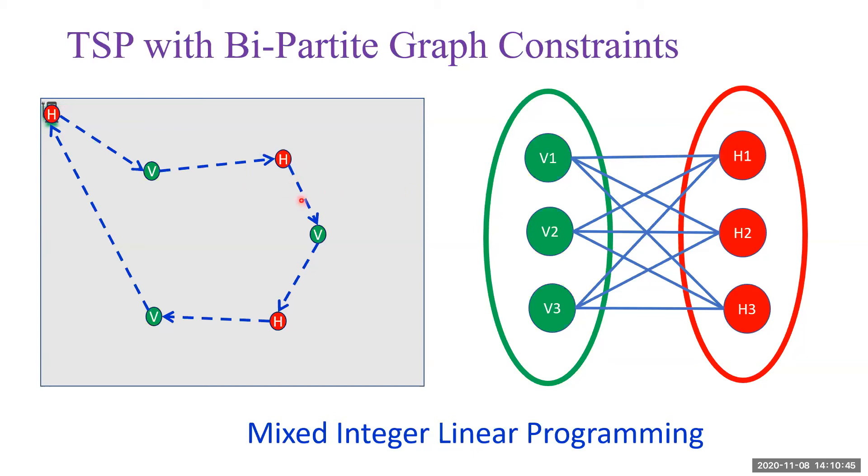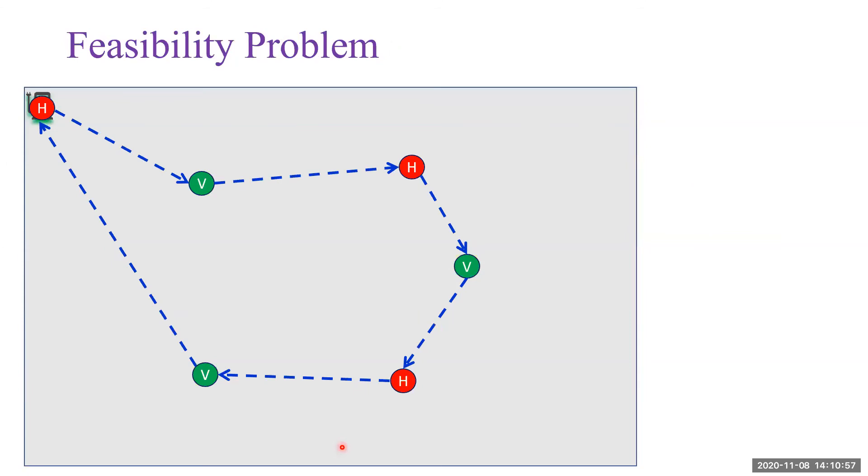The TSP problem with bipartite graph constraints can be solved using mixed integer linear programming. Now let's make another assumption that the switching between optimal coverage and optimal charging locations are synchronized. Let's say all agents start and finish the switching at the same time.